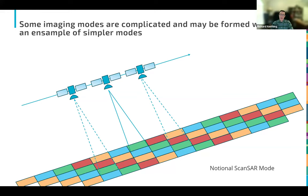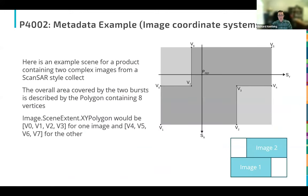A ScanSAR product is not easily described as a single strip map or spotlight collect. Here is an example from our current draft showing two complex images from a scan mode collect described by bursts with polygons. This illustrates how earlier standards like CEOS couldn't support such products. P4002 is specifically designed to incorporate advanced support for these newer, more complex collection modes.